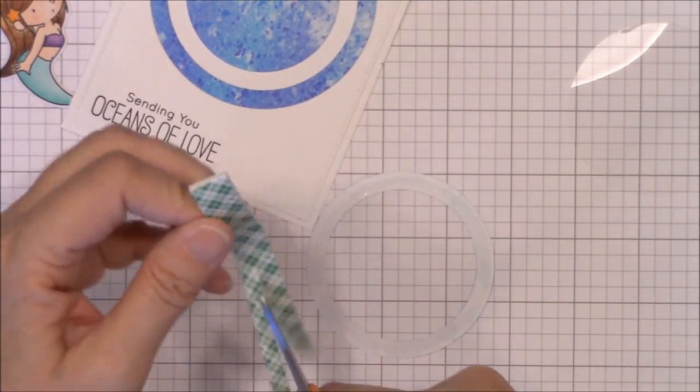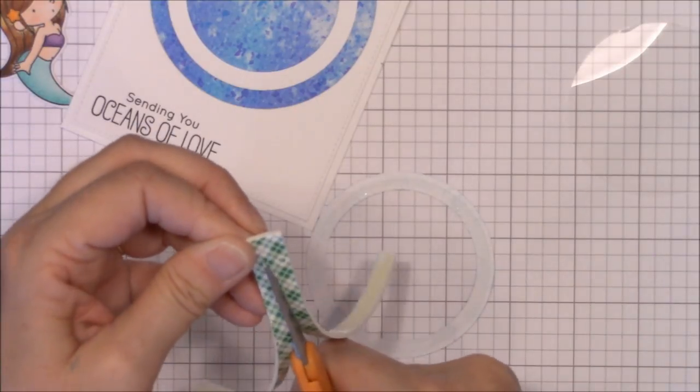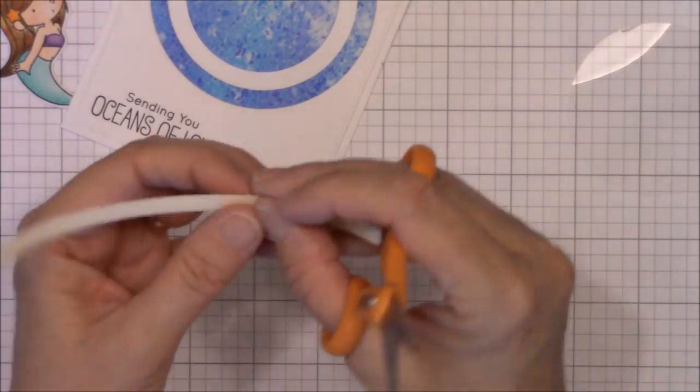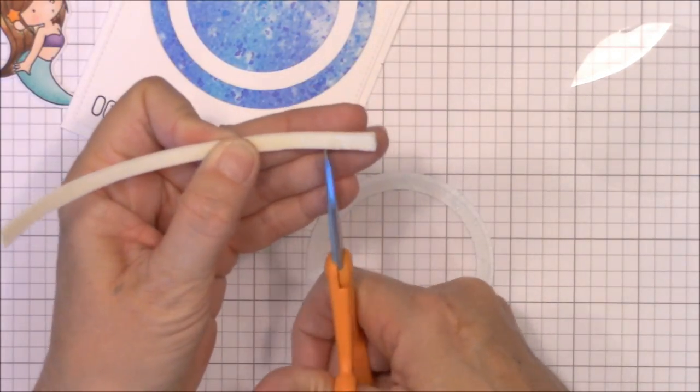Then I need to add two layers of foam tape to the back of the shaker pocket. And here's a tip. Do your best to keep the foam tape as close to the inside edge of the circle frame as you can.